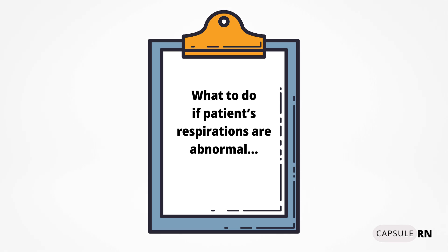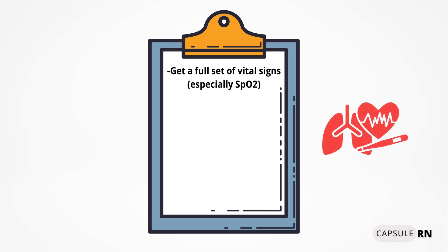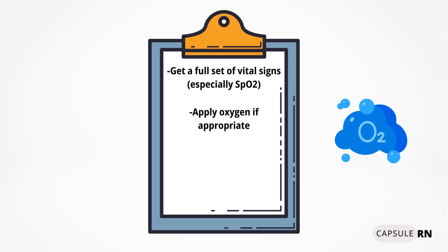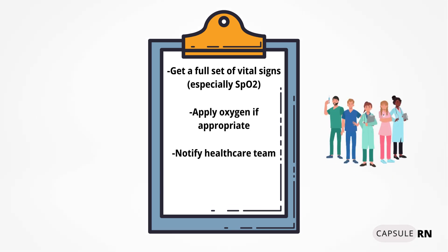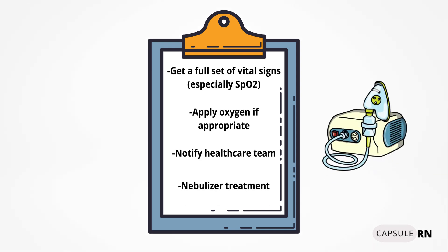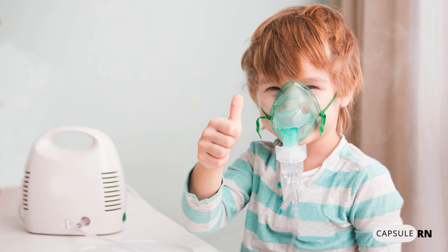Let's talk about what you need to do if you notice your patient's respirations are abnormal for any reason. Get a full set of vital signs, especially the pulse oxygen level. Apply oxygen if it's appropriate to do so. Notify the proper healthcare team members such as the doctor, respiratory therapist, and rapid response team as is appropriate. And lastly, give a nebulizer treatment if the doctor orders that. A nebulizer treatment takes a liquid lung medication, turns it into mist, and the patient inhales it through a mask. A nebulizer is often ordered for breathing difficulties to help with wheezing, coughing, and shortness of breath.